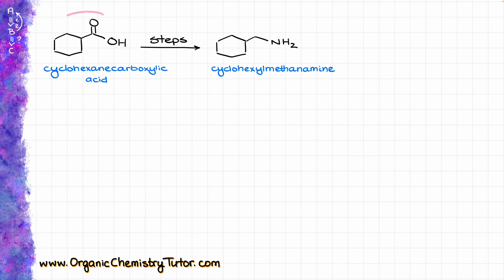Here I have cyclohexane carboxylic acid and we are going to be turning that one into cyclohexyl methanamine. And the first thing that I always do for all synthesis problems, I check the number of carbons we have in the starting material and in the product as well.